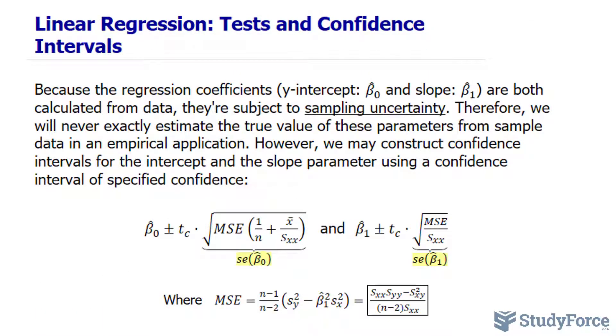Before we do that, let's discuss why we're doing this. Because the regression coefficients, beta hat sub zero and beta hat sub one, which represent the y-intercept and slope, are both calculated from data, they're subject to sample uncertainty. Therefore, we will never exactly estimate the true value of these parameters from sample data in an empirical application. However, we may construct confidence intervals for the intercept and the slope parameter using a confidence interval of specified confidence.